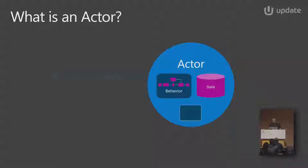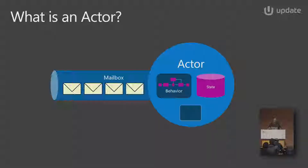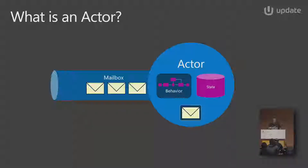But then it becomes more interesting, because every actor automatically has a mailbox. And the only way to communicate with an actor is through this mailbox — you will never get a direct link or a direct reference to the actor. You have to send it messages. What makes it even more mind-boggling, because we want to build highly concurrent systems that do lots of stuff at the same time, is this: an actor only handles a single message at a time. Never two, never three — one message at a time. That's a bit of a contradiction: I want to build a highly concurrent system, but I can only handle one message at a time.